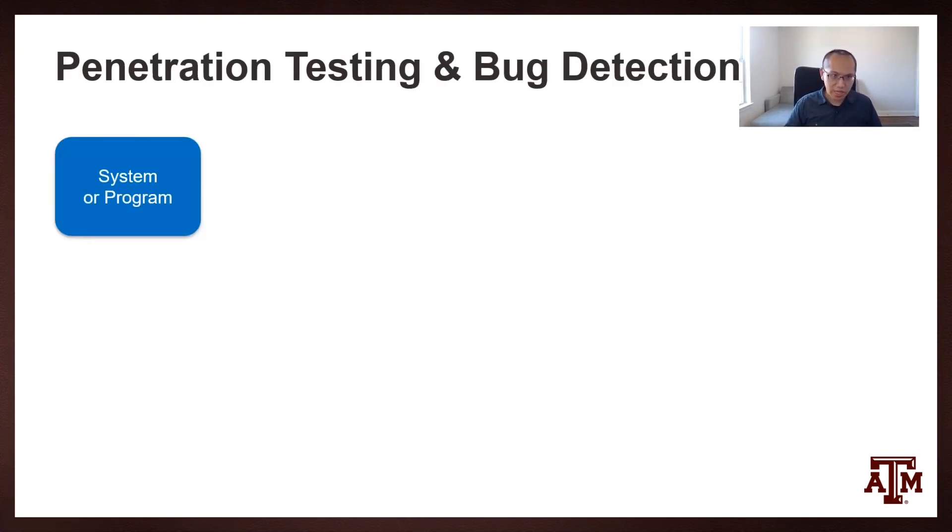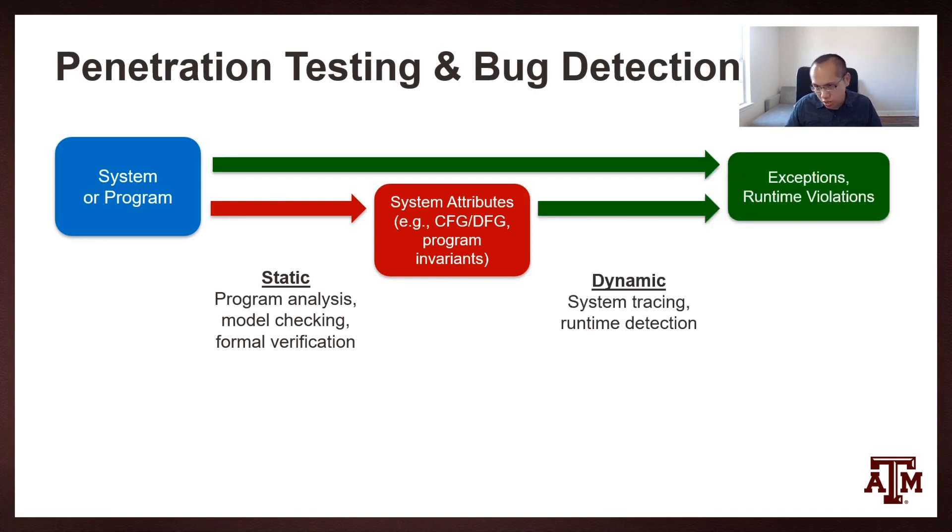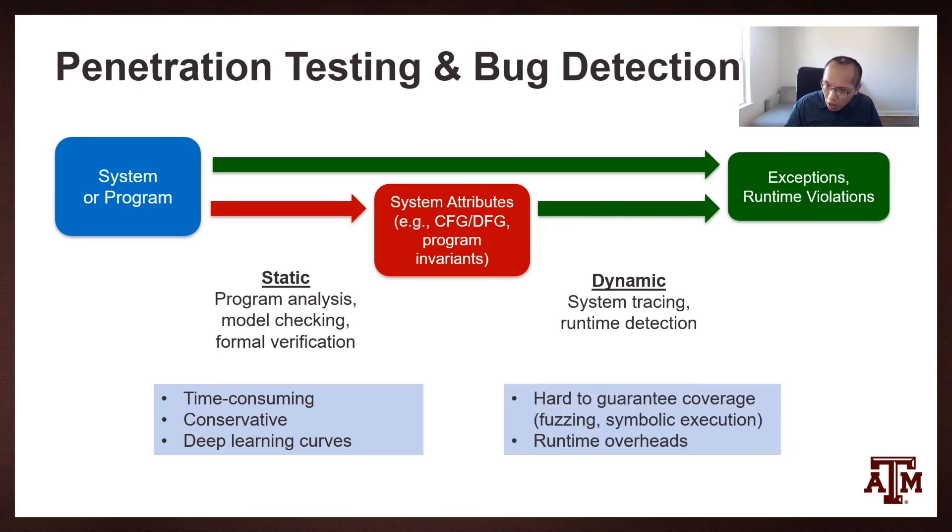In order to assess the risk in a system or program, you have to go through penetration testing and bug detection. There are typically two ways of doing this. One way is static methods, including program analysis, model checking, and formal verifications. Using these techniques, you can extract system attributes such as control flow graph, data flow graph, or program invariance. Another method is dynamic methods, including system tracings and runtime detections. Here you can extract exceptions and runtime violations. Although you can combine these techniques together, both of them have their weaknesses. For static methods, it could be time-consuming and has to be done conservatively because of error. You also have a pretty deep learning curve because they are quite complex. But in dynamic methods, typically, it's quite hard to guarantee its coverage of a single run or multiple runs. So you will have to use techniques like fuzzing or symbolic execution. Also, there's a runtime overhead you have to overcome.